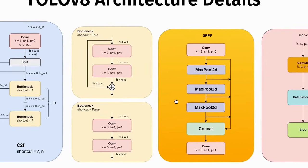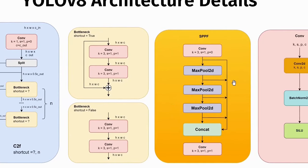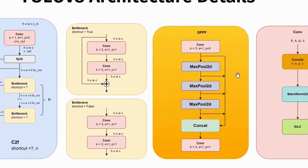The SPPF block is next. SPPF stands for Spatial Pyramid Pooling Fast. It is a modification of SPP, or Spatial Pyramid Pooling, with higher speed. Inside SPPF, there is a convolutional block at the beginning followed by three max pooling layers. The interesting part is that every resulting feature map is concatenated right before the end of SPPF. SPPF ends with a convolutional block.